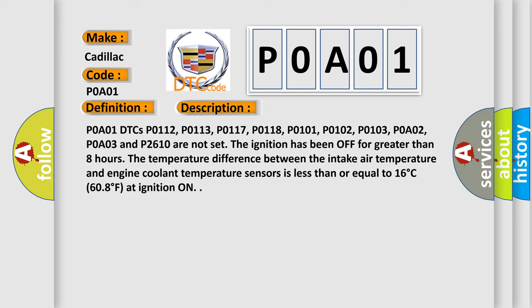The temperature difference between the intake air temperature and engine coolant temperature sensors is less than or equal to 16 degrees Celsius (60.8 degrees Fahrenheit) at ignition on.